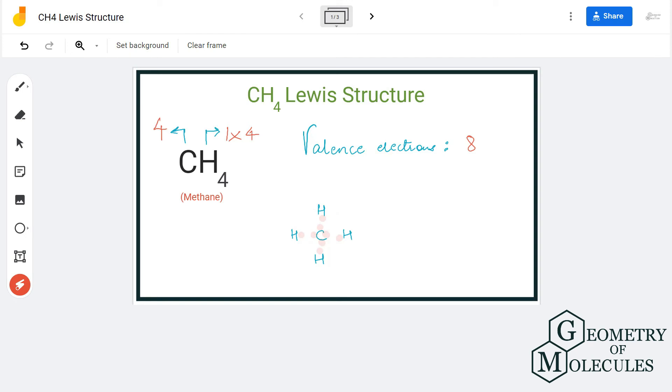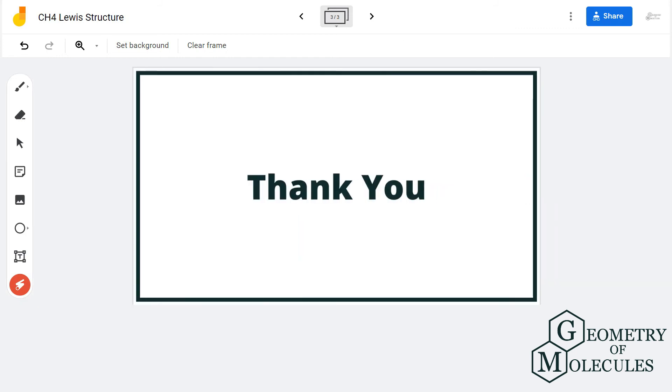So we have used eight valence electrons here. Carbon has a complete octet, hydrogen has attained a stable structure, and this is the Lewis structure for CH4 methane.